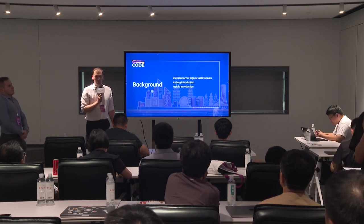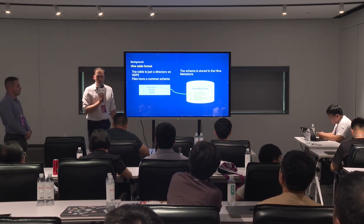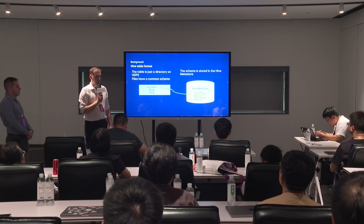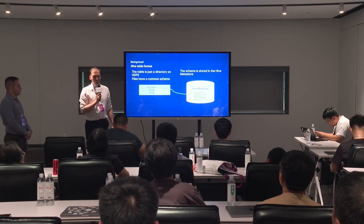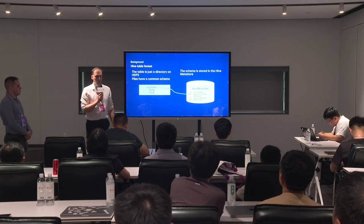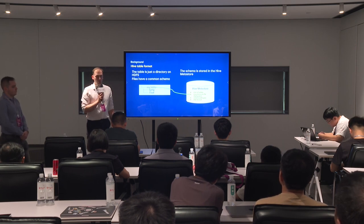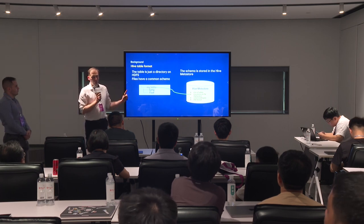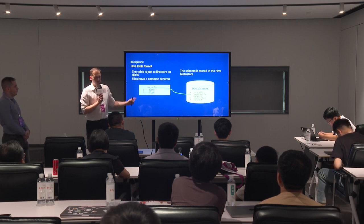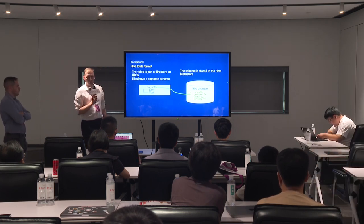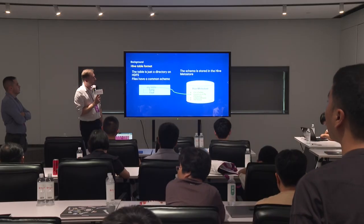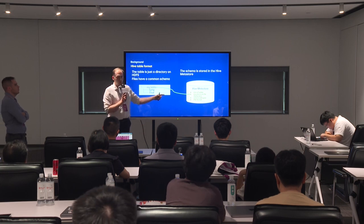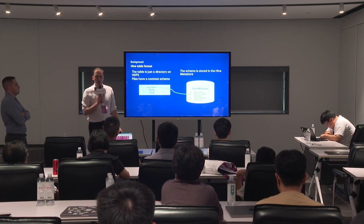Let's start with a little historical background. A table in Hive is a very simple concept — basically it is a directory on a distributed storage system. Under the directory there are data files that all use the same data file format, for example CSV, Parquet, or ORC, and they need to be in the same schema. At the end, you need a catalog service to list what tables are in your system and where to find them.